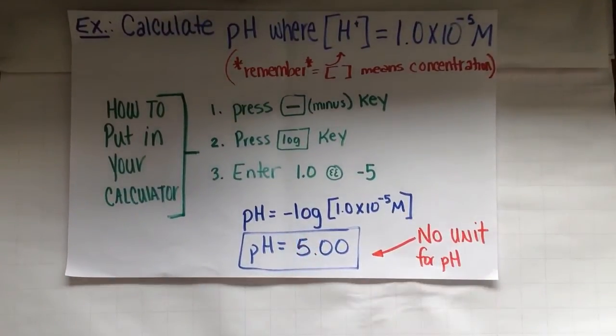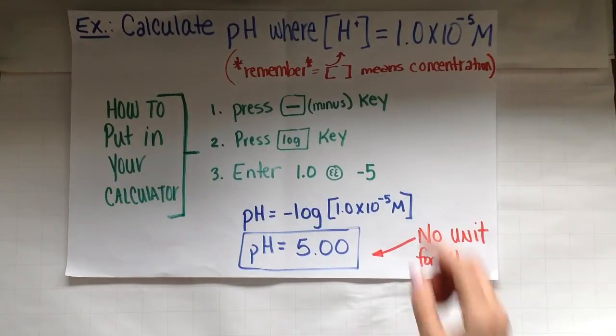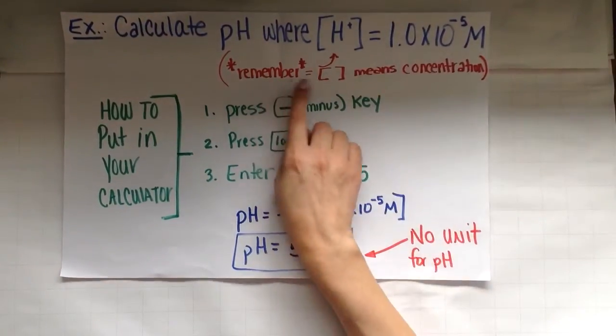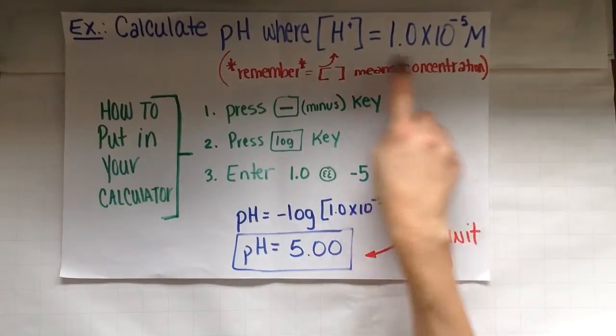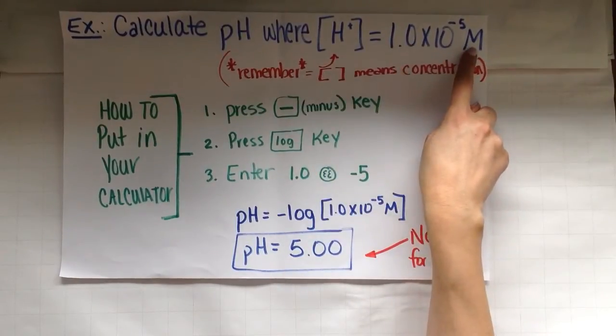So let's look at some sample calculations. It says calculate the pH where H plus is equal to 1.0 times 10 to the negative fifth molarity. Let's remember the brackets mean concentration. And again, my value has a capital M for molarity. Molarity measures concentration.